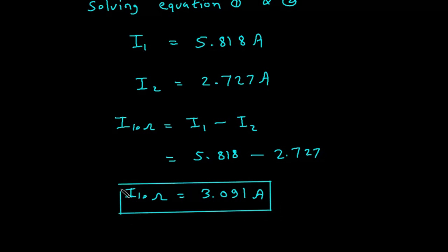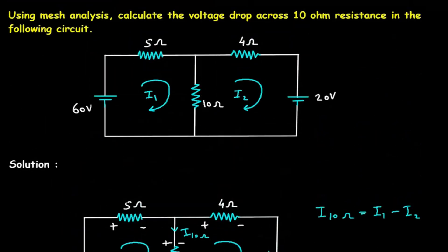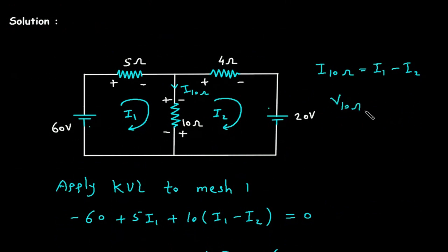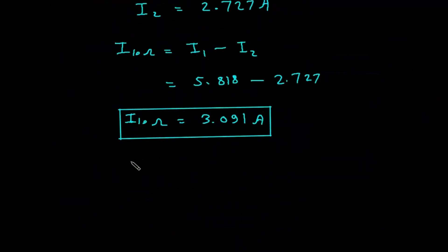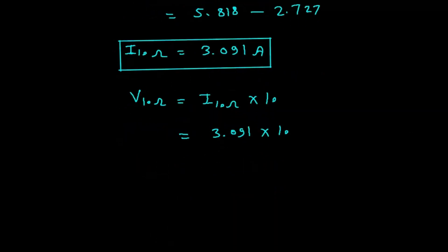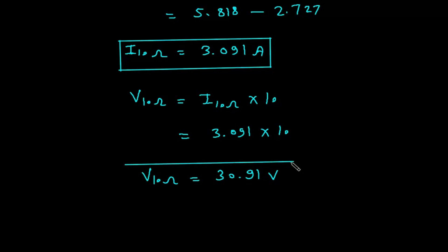Now we can find the voltage drop across the 10 ohm resistance. Let's call it V10ohm. V10ohm equals I10ohm multiplied by 10, so V10ohm equals 3.091 into 10. Therefore, V10ohm equals 30.91 volts.